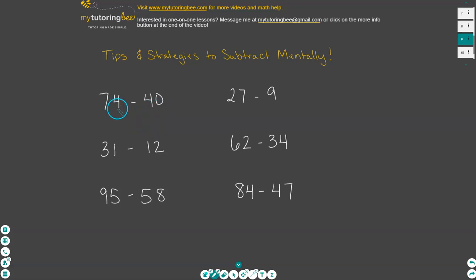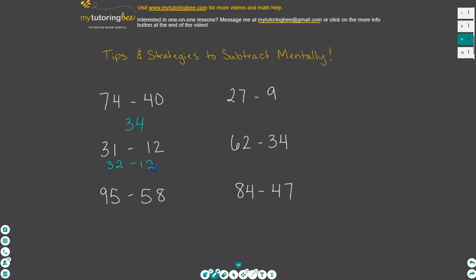Let's start with 74 minus 40. I actually have a larger number in the ones place than in the second number, so I can subtract like normal, and then seven minus four is three — that one was pretty easy. But now let's talk about 31 minus 12. One way to think about this is: what if this was 32 minus 12? 32 minus 12 is a lot like those level one problems where we have the same number in the ones place, resulting in zero in the ones place. Then we subtract the tens place — three minus one is two — so 32 minus 12 gives us 20.